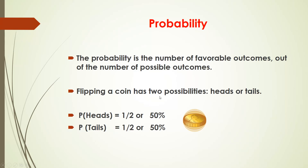Flipping a coin has two possibilities: heads or tails. So this is the number of possible outcomes. When you flip a coin there are two possibilities, heads or tails. So the probability of heads is equal to half or 50%, and the probability of tails is equal to half or 50%.